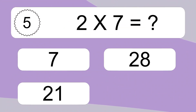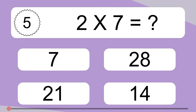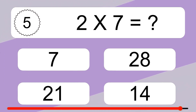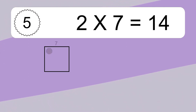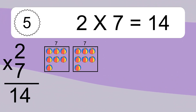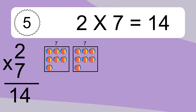Two times seven equals what? Two times seven equals fourteen. We have two boxes, and each box has seven colorful balls inside. If you count all the balls in all the boxes together, you will have two times seven balls. This equals fourteen balls.